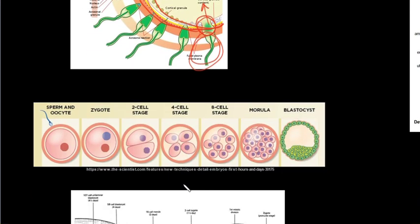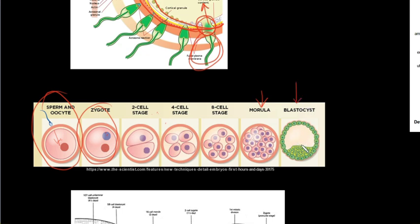The diploid zygote contains genetic material from both parents and then undergoes mitosis, growing and developing to eventually form a morula — a ball of cells. This ball of cells then divides further to form a mass of cells surrounding a central fluid-filled cavity, now called a blastocyst. The external layer is known as the trophoblast, and the internal cell mass will eventually become the embryo that develops into the fetus.